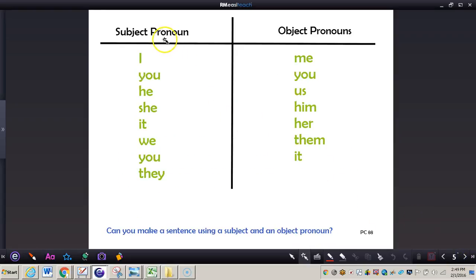Now here's a list of subject and object pronouns. Subject pronouns: I, you, he, she, it, we, you, they.